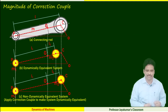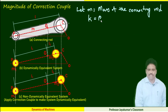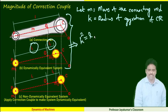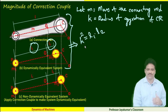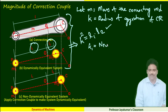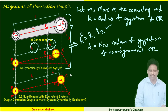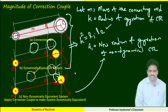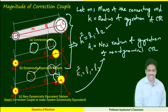How to find the magnitude of correction couple? M is the mass of the connecting rod, and K is the radius of gyration of the connecting rod, where K² = L1 × L2, referring to equation three of the dynamically equivalent system. Now let K1 be the new radius of gyration of the non-dynamically equivalent connecting rod system — because the mass has shifted its position, K1 will not be the same as K. Knowing L1 and L3, we find K1² = L1 × L3.